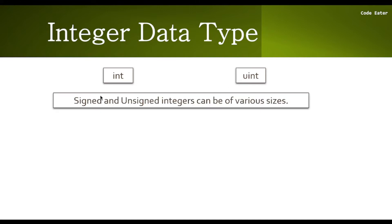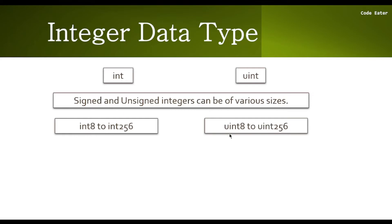Signed and unsigned integers can be of various sizes. In Solidity, int can be from int8 to int256, and in the same way uint can be from uint8 to uint256. The numbers 8 and 256 simply mean 8 bits and 256 bits respectively, and these bit values are actually telling us the range of these data types.